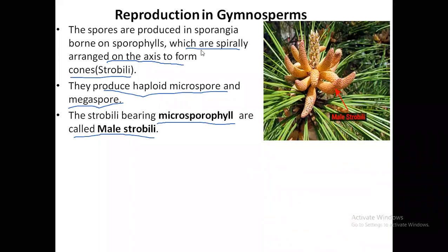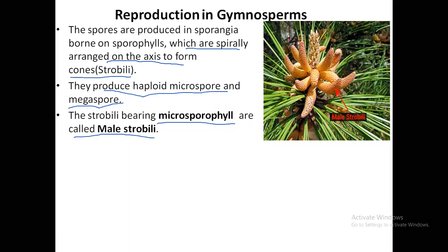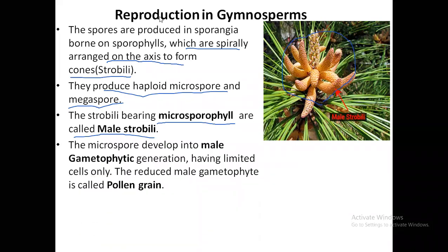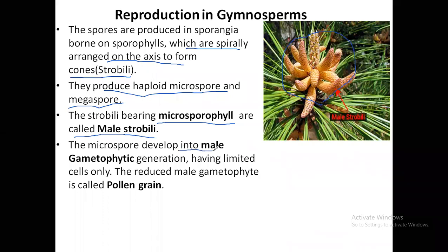This is how a male strobili looks. You can see that the central axis of the stem has structures spirally arranged around it. They are cone-like, and these small extensions are actually the male strobili.